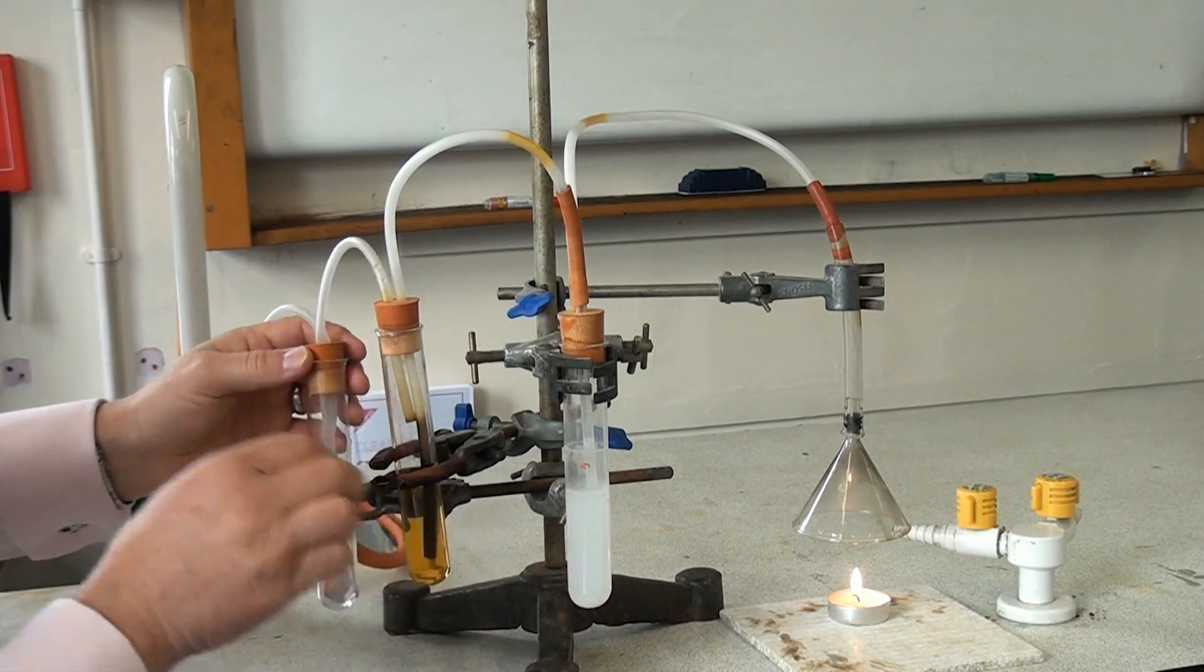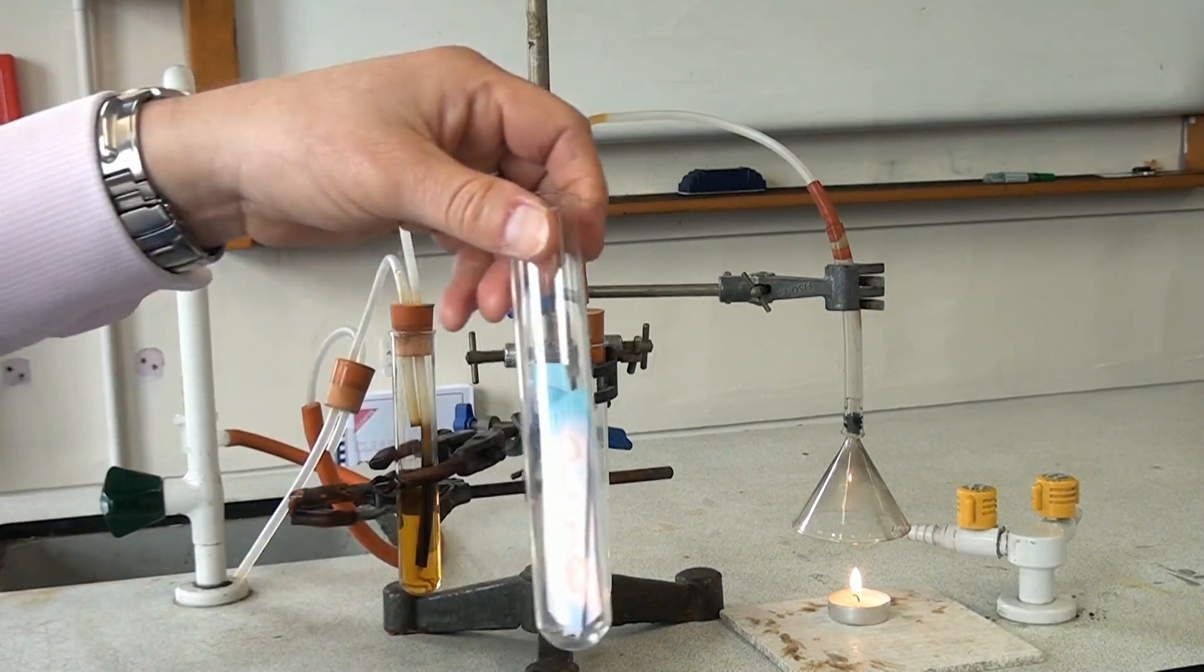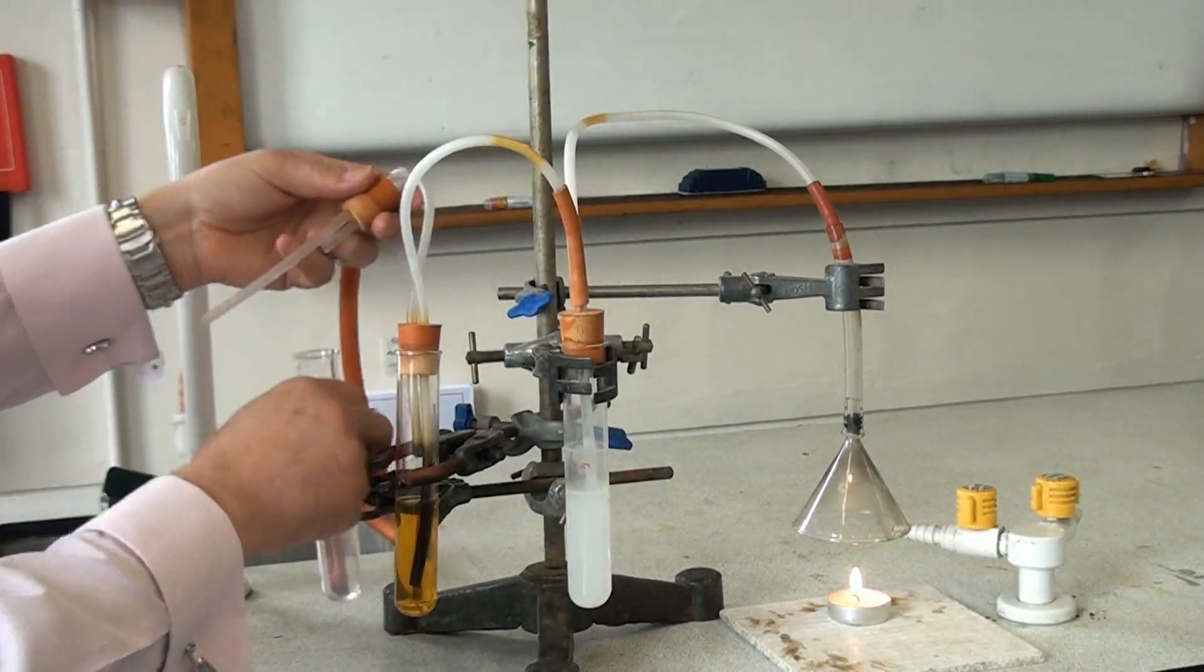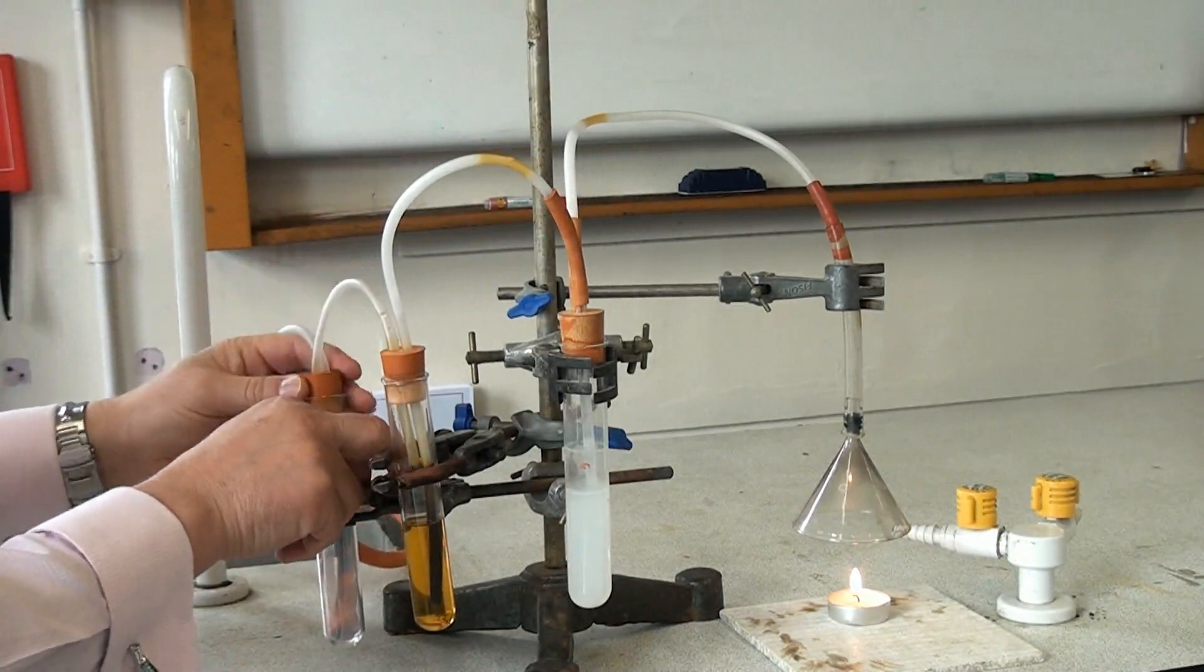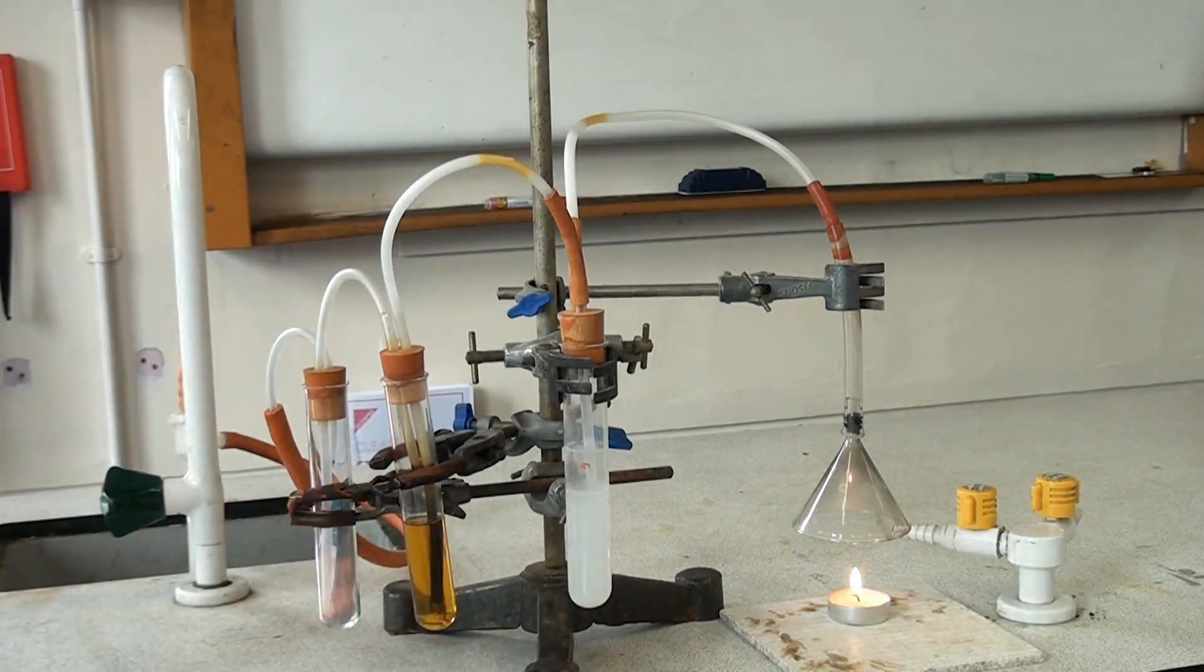And in the final tube where we had the blue cobalt chloride paper, you can see that started to turn pink which shows that water vapour is given off by the burning fuel. Quite a surprising sight. You wouldn't expect water to be given off by something that's on fire.